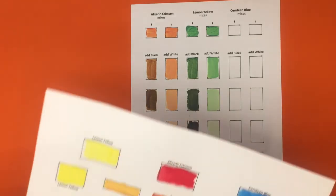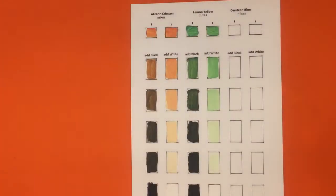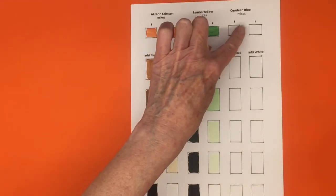Repeat the process in the last row by using alizarin crimson and cerulean blue. Here you get some wonderful darks.